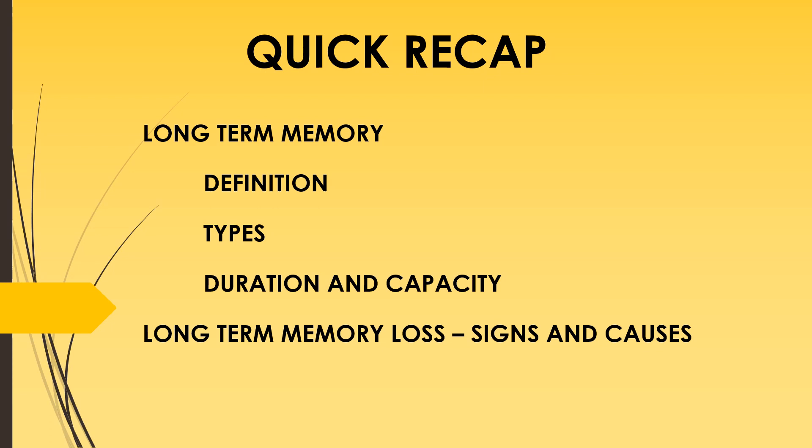To recap: long-term memory is information stored in the brain for the long term that can be recalled with ease. Long-term memory is divided into explicit and implicit types. Explicit or declarative memories can be recalled consciously and include episodic memories related to events and semantic memories about facts. Implicit memories are related to skills a person learns. We also covered the duration and capacity of long-term memory, as well as long-term memory loss — its signs and causes.